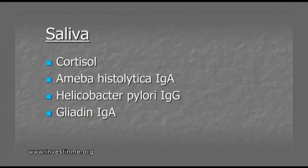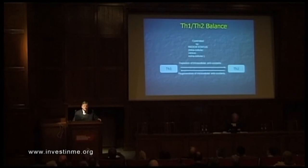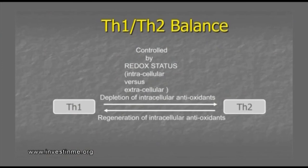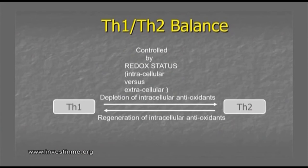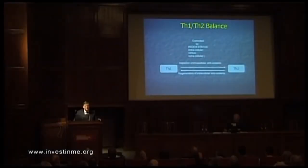In the saliva you can do a lot of hormonal measurements — cortisol is often low. We can detect IgAs for amoeba, helicobacter, and also gliadin IgAs. For urine testing — we presented a new urine test two years ago. We know the Th1/Th2 balance is controlled by the redox status, defined by the intracellular versus extracellular situation. When you have a depletion of intracellular antioxidants, you shift towards a Th2 immunity. When you recover the antioxidants, you shift towards Th1. The majority of CFS patients — we already published this in 2002 — has a Th2-dominated immune system.